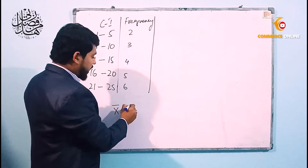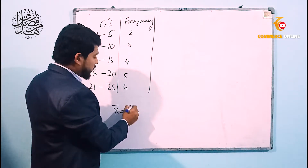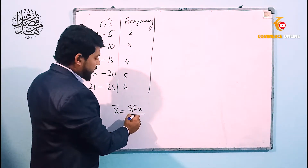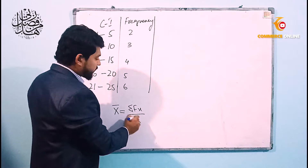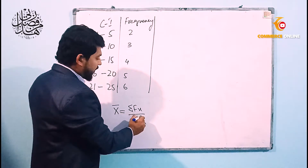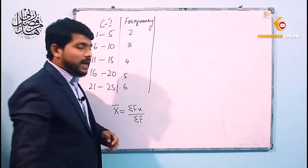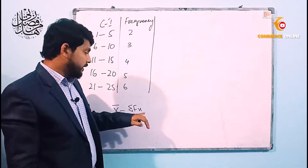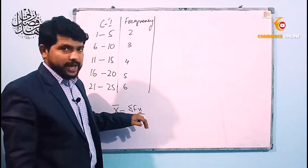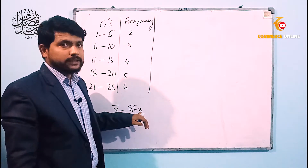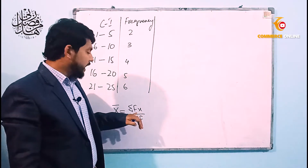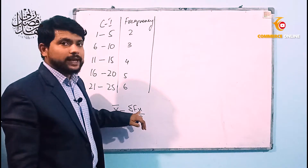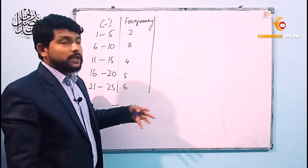x̄ = Σfx ÷ Σf. तो यहां अब आपको दो चीज़ें calculate करनी हैं — सबसे पहले x calculate करना है, and then frequency को x से multiply कर देना है।